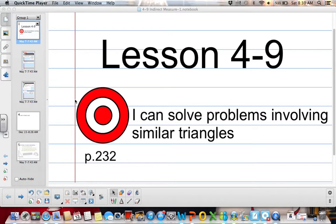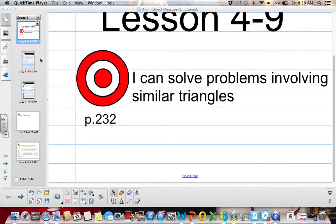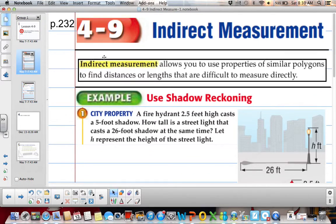We'll be solving problems involving similar triangles. So indirect measurement, which you can add to your vocab sheet, allows you to use properties of similar polygons to find distances or lengths that are difficult to measure directly.